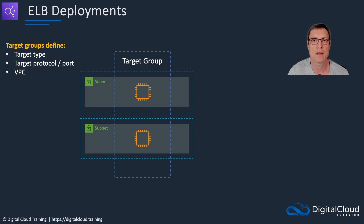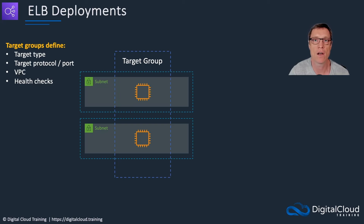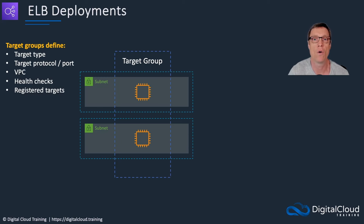Next we have the VPC that the instances are in, and health checks. The health checks define which port and protocol is going to be used by the load balancer to check whether the instances are available, healthy, and ready to receive connections — and only if they are will it forward connections to them. We also have the registered targets themselves. We can register targets manually, or we can attach the target group to an auto scaling group and they'll be registered dynamically as they're launched and removed when they're terminated by the ASG.